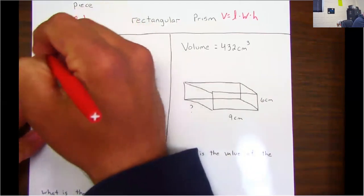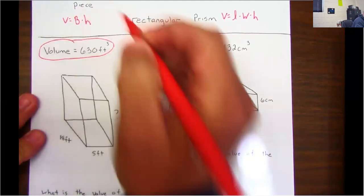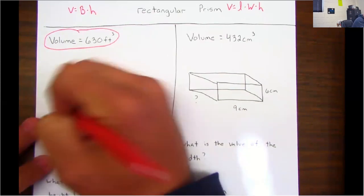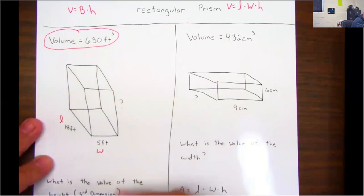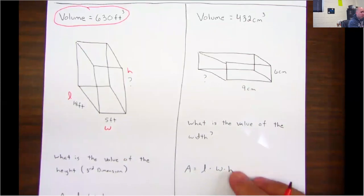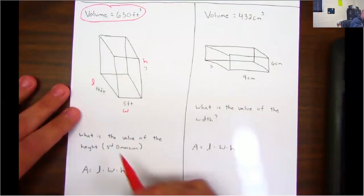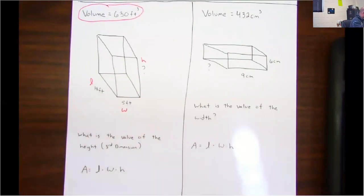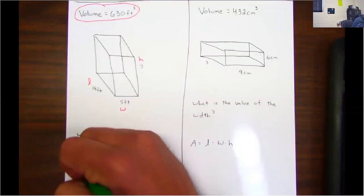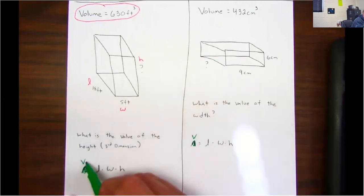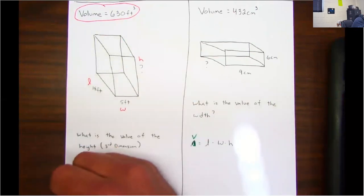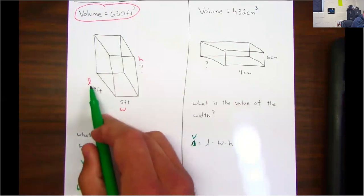So on this first example, notice it gives me the volume, it gives me the length, it gives me the height - I'm sorry, it gives me the width - I'm solving for the height. Okay, so here we go. My V, my volume is 630. My length is 18.